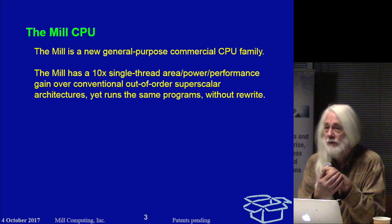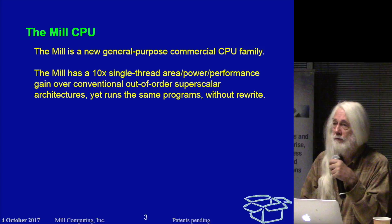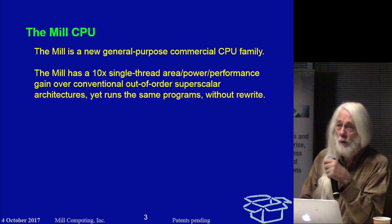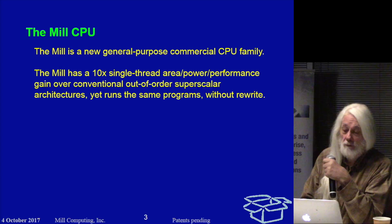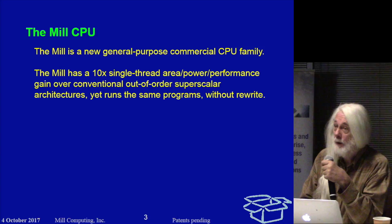The Mill is a new CPU architecture. There has been essentially zero development in machine architecture since the RISC development and, in hardware terms, since the development of caches. There's been a lot of evolutionary advances, but nothing much has really changed. That's a long time period, and the Mill reflects a from-scratch rethink of exactly what a CPU should do. And one of the things it should do is be able to be sold, which means it has to run conventional programs written in conventional languages without rewrite, and it has to have enough of an advantage over existing chips that people will be interested in buying it.